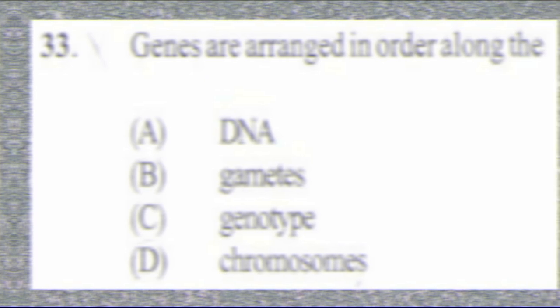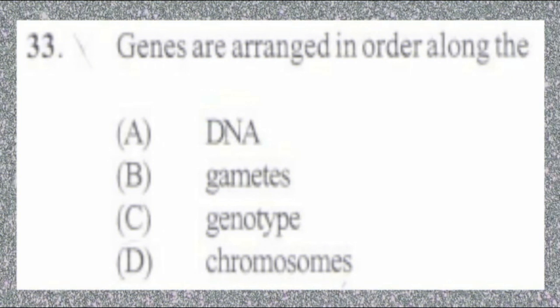Question number 33. Genes are arranged in order along the: A. DNA, B. Gametes, C. Genotype, D. Chromosomes. The answer is D, chromosomes.